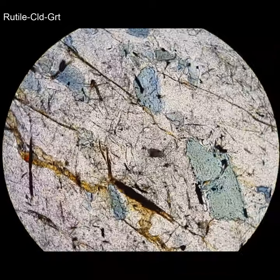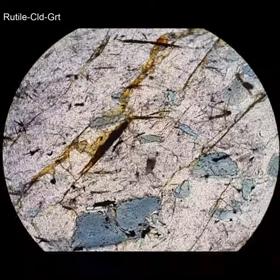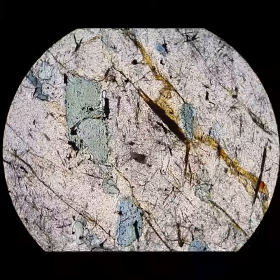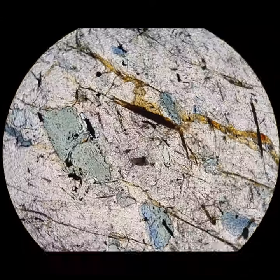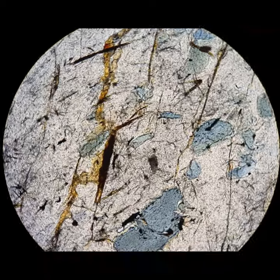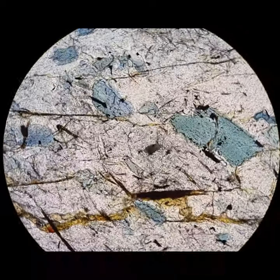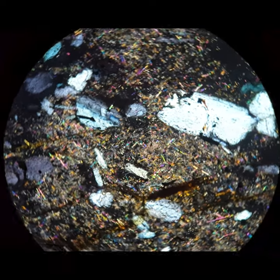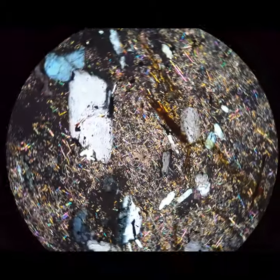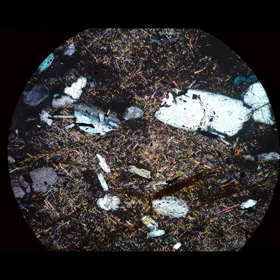This probably just looks kind of fuzzy, but when I cross the polars, what you'll see is that this garnet — which is the host phase — is absolutely filled with rutile needles. All of that highly birefringent material is all rutile. Rutile has super high interference colors, so even the thinnest of needles look birefringent. I've seen this texture in several rocks and it's pretty distinctive.